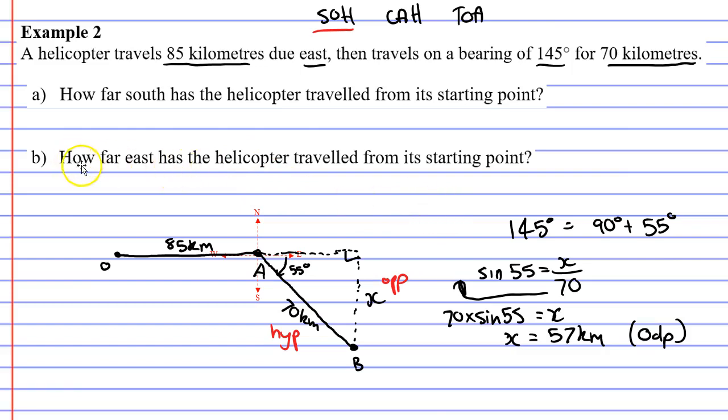Now, we're not moving on to question B yet. We need to find the side here called Y now. We know X is 57. We need to find Y. How are we going to do that?